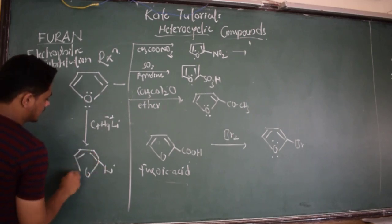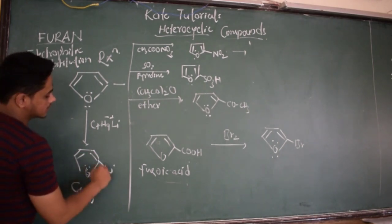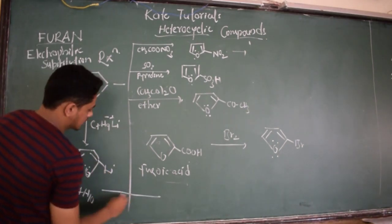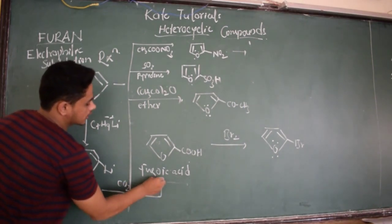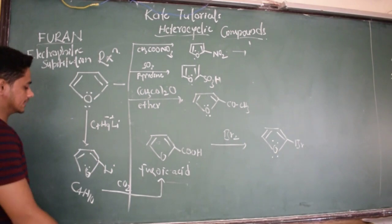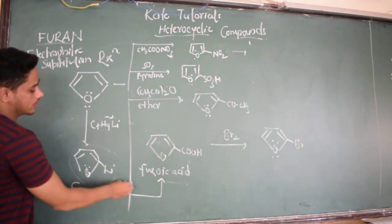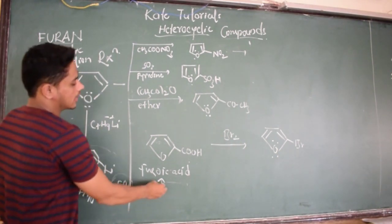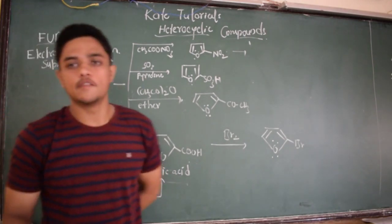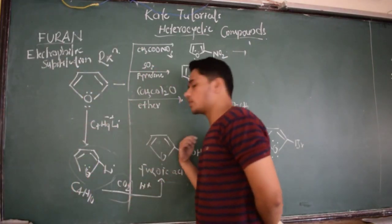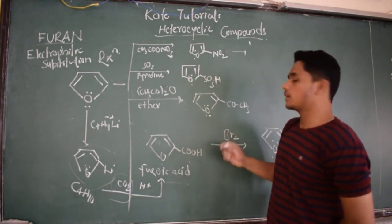If I treat this compound with carbon dioxide, then I am going to get this furanoic acid. This compound when treated with carbon dioxide in acidic medium, I am going to get this furanoic acid. From this furanoic acid we are going to get bromination - that is 2-bromofuranoic acid.